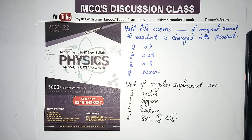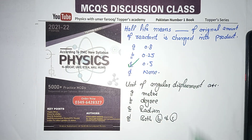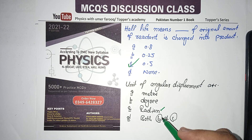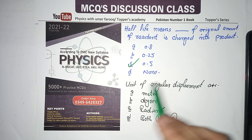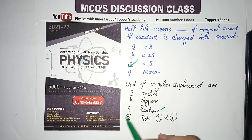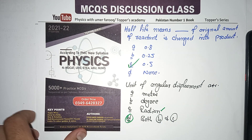Half-life means 0.5 of the original amount of reactant is converted to product. For units of angular displacement: both degree and radian are valid units, so the answer is option D — both B and C.